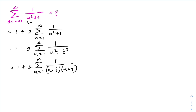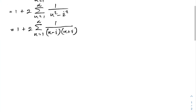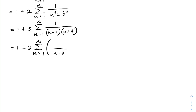Then we can find the partial fractions using the cover method. For the factor n minus i, we plug in n equals i, giving i plus i equals 2i, so the coefficient is 1 over 2i. For n plus i, we plug in n equals minus i, giving minus 2i, so the coefficient is minus 1 over 2i.